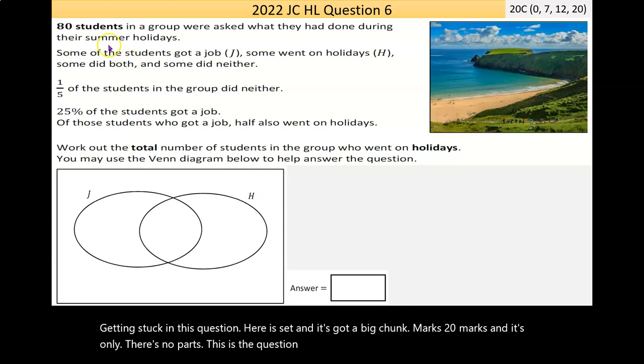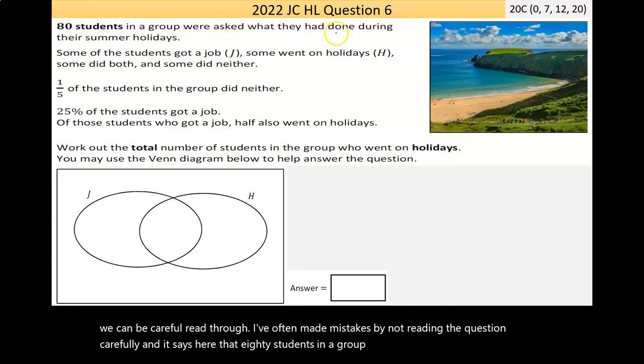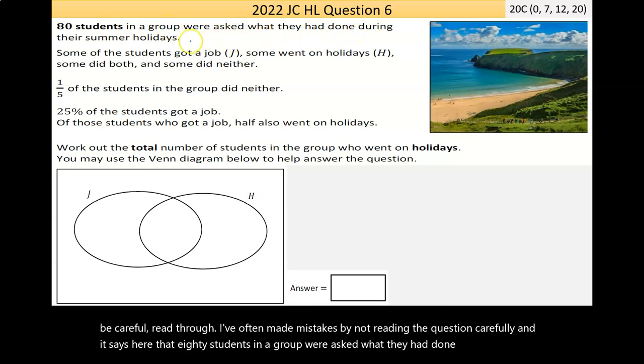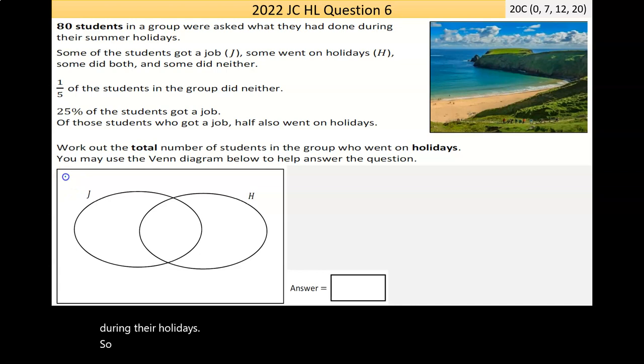One of my problems with sets is lots of words, so be careful reading through it. I have often made mistakes by not reading the question carefully. It says here that 80 students in a group were asked what they had done during their holidays. So the universal set there is equal to 80.